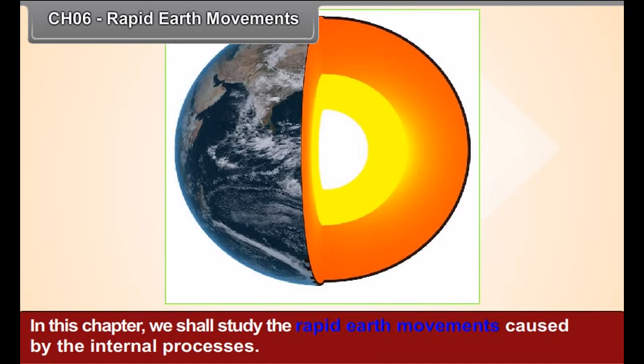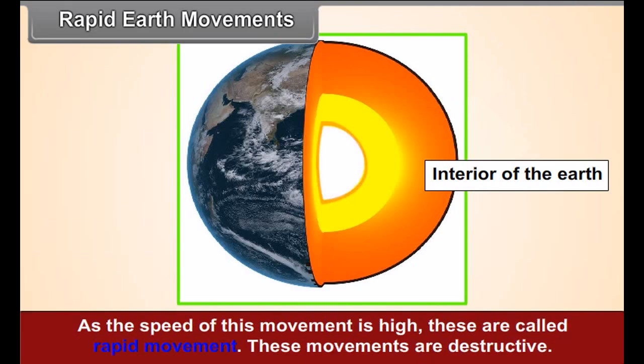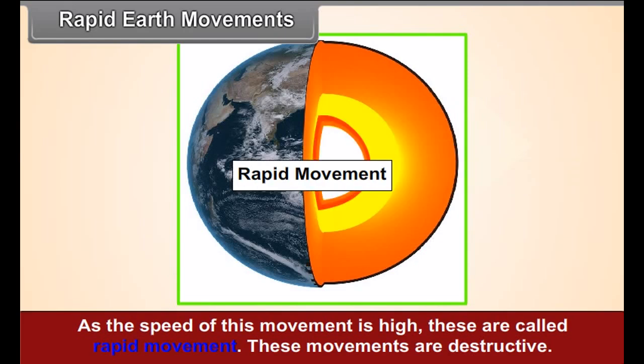Chapter 6 Rapid Earth Movements. In this chapter, we will study the rapid earth movements caused by the internal processes. At times, there is a large scale and sudden release of energy in the interior of the earth. This gives rise to rapid earth movements. As the speed of these movements is high, these are called rapid movements.